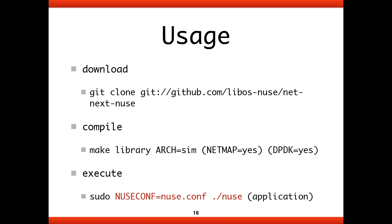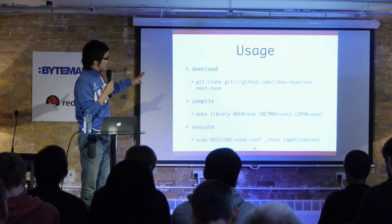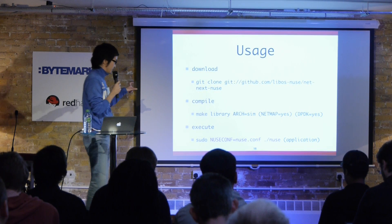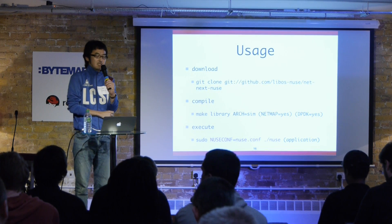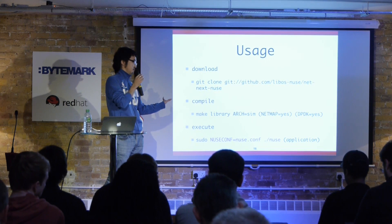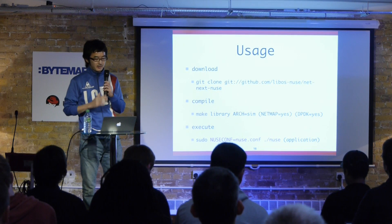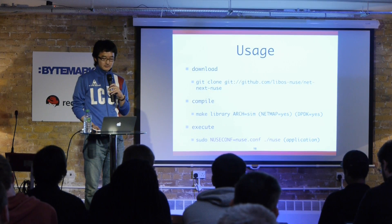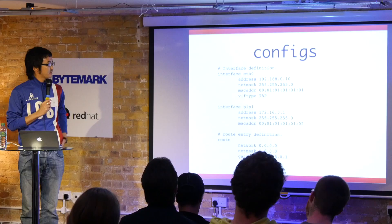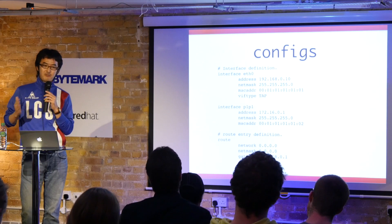How do you use NUSE? We provide a simple procedure. You download the code and compile this modified version of the Linux code with a specific option — 'make library' gives you the library version of the Linux kernel. Then you execute your application with specific options for the NUSE use case. Since our initial version has no rich configuration interface, we provide a simple configuration file to set IP addresses, routing information, and so on.